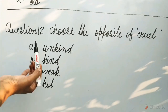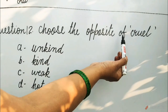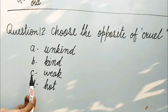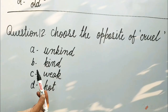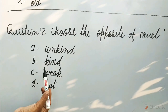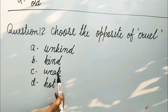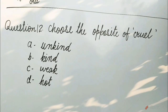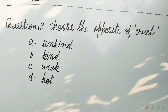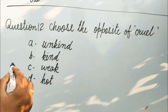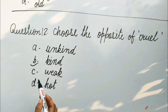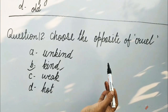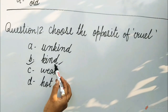Question 12: Choose the opposite of cruel. Options are A. Unkind, B. Kind, C. Weak, D. Hot. Guess children, which option will be correct? Yes, it is B option — Kind. The opposite of cruel is kind.